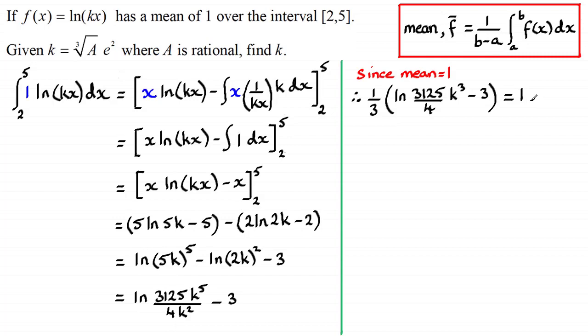Then I'm just going to simplify this, head towards working out k. I'm going to multiply both sides by 3 here just to get rid of that 3. And then we'll add this 3 to both sides. And we're going to get this result. And then anti-log to get rid of this natural log here. And you're going to get 3125 over 4 times k cubed equals e to the power 6. Rearrange this for k cubed by multiplying before and dividing by 3125 and then take the cube root of both sides.